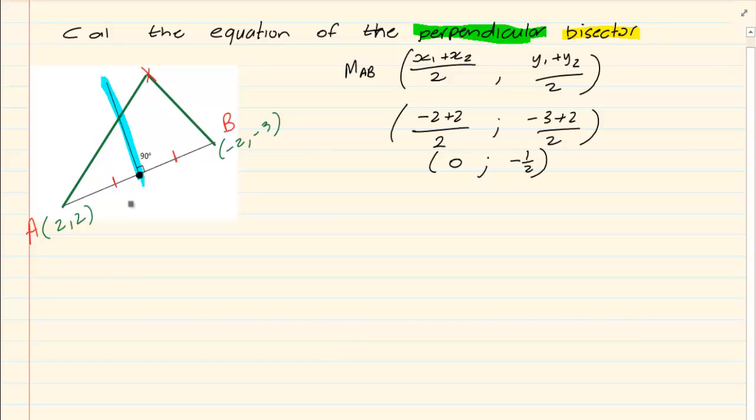Now after we got the coordinate, we need a gradient. We don't have two points to use a gradient on that line. So what we use is we are going to find the gradient of AB. Now the gradient of AB is y2 minus y1 over x2 minus x1 giving us minus 3 minus 2 all over minus 2 minus 2 which is equal to minus 5 over minus 4 which is equal to 5 over 4.